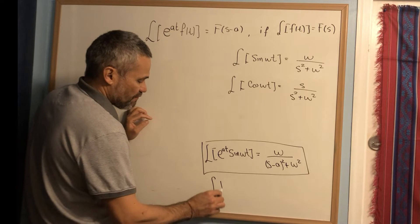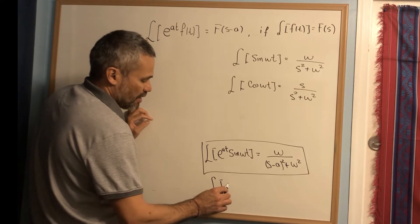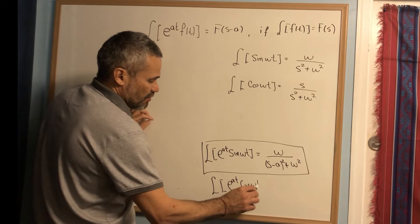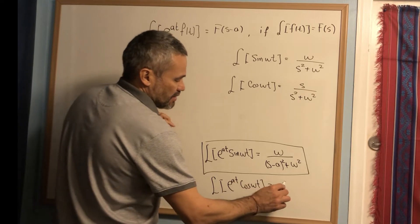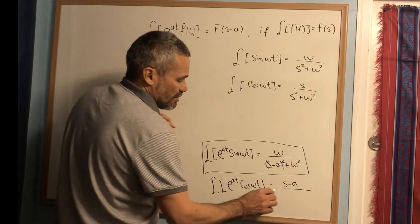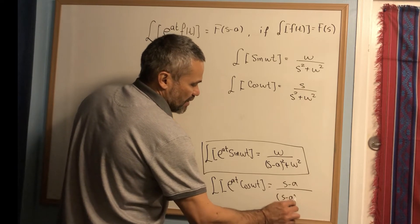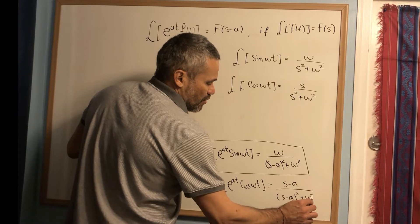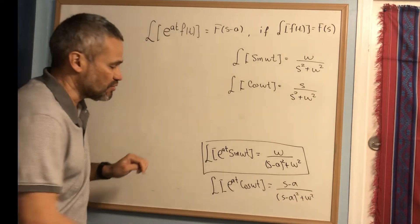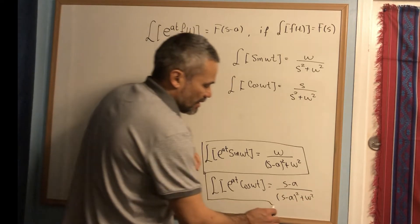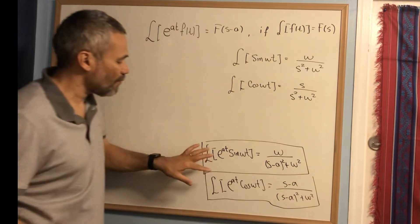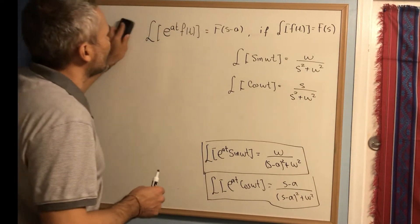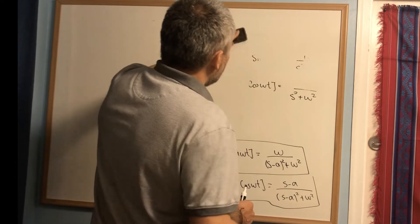Applying the same idea to cosine, the Laplace transform of e^(at) cos(ωt) is (s-a) over (s-a)² plus ω². Now let's do some problems that apply these two formulas.